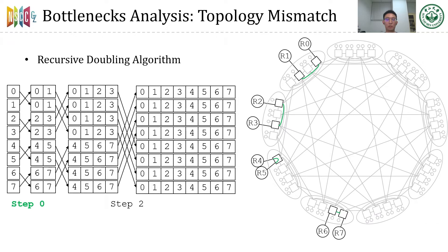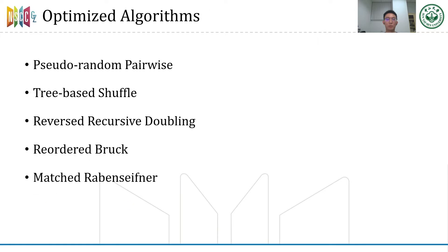In some algorithms, a large amount of data is transferred to far-away destinations while a small amount is transferred to neighboring destinations — such as in recursive doubling. We call this topology mismatch. An example with eight processes is shown: the green line shows the first step in recursive doubling, which transfers the least amount of data but to far-away nodes. For these bottlenecks, we proposed five optimizations.